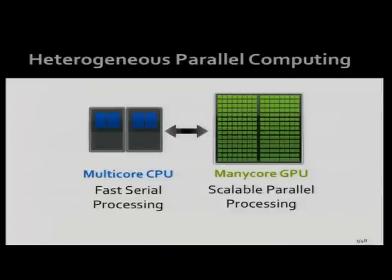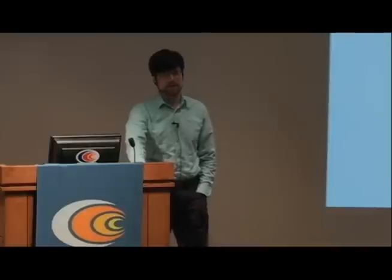CUDA is a programming model designed for heterogeneous parallel computing, where you have a multi-core CPU, which is great at fast serial processing, and a many-core GPU, which is designed for scalable parallel processing, and they work together. Every CUDA program has a portion designed to run on the host and a portion designed to run on the device. We use CUDA to move the heavy lifting of the numerical computation onto the GPU because GPUs are more energy efficient and provide higher performance.